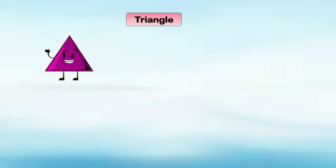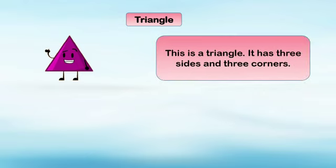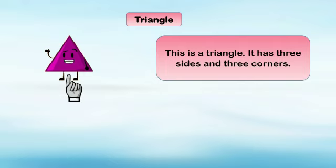Our next shape is triangle. This is a triangle. It has three sides and three corners. Let's count the sides: one, two, and three. And now the three corners: one, two, and three.